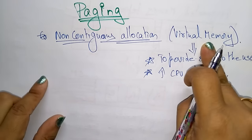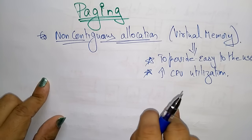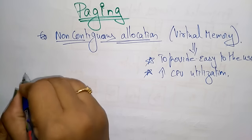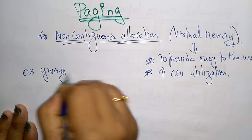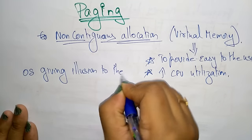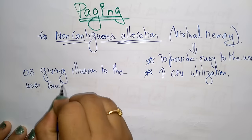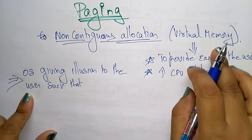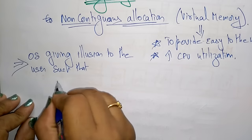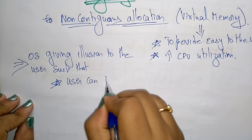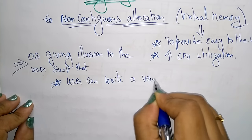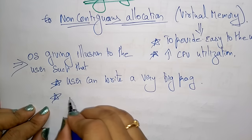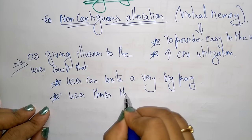To increase the CPU utilization, we use the concept of virtual memory. In this system, the operating system gives an illusion to the user. It is giving illusion by using the concept of virtual memory — the user can write a very big program.